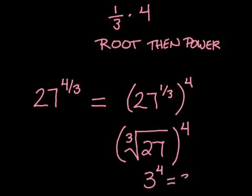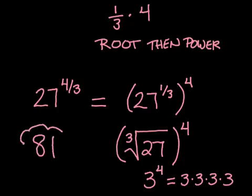This gives me 3 times 3 times 3 times 3, which is 81, my final answer. So without a calculator, and just by doing this in the easiest order possible, we can calculate 27 to the 4 thirds power and get 81.